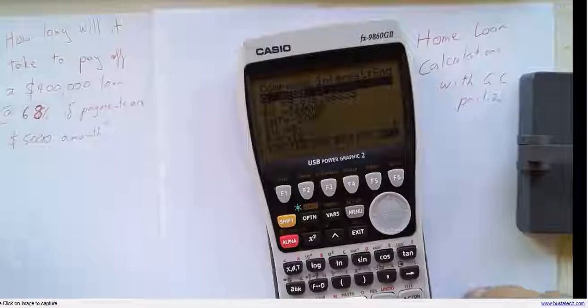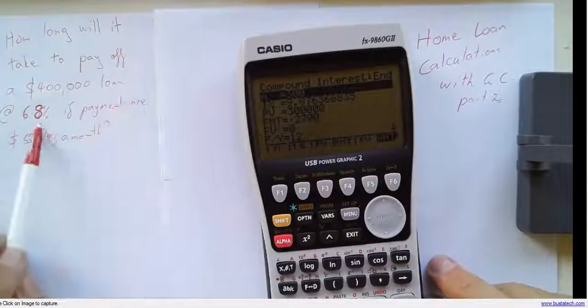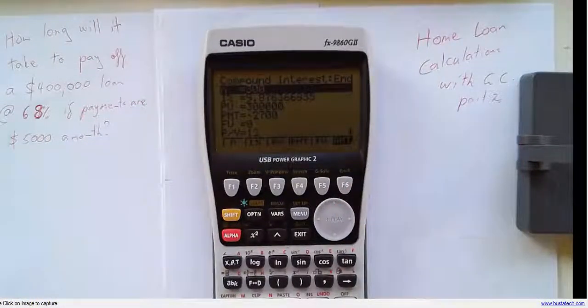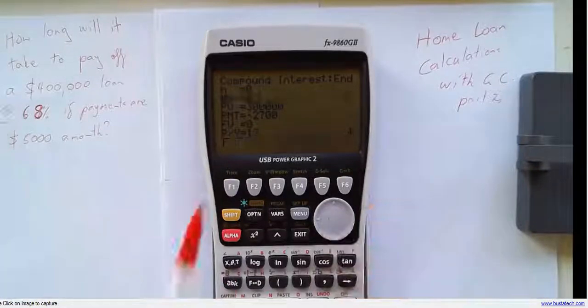Okay, let's do one more of these questions. How long will it take to pay off a $400,000 loan at 6.8% if payments are $5,000 a month? That's a very high payment. Shouldn't take that long.